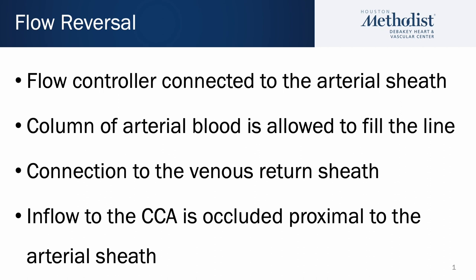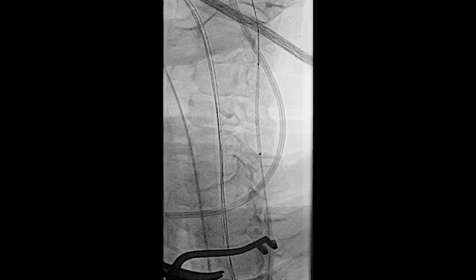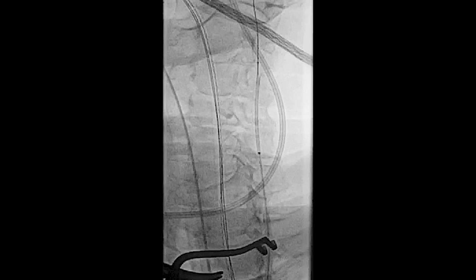To ensure reverse flow, we tightened the umbilical tape on the common carotid artery proximal to the arterial sheath. The lesion was crossed with an O14 guidewire and we performed primary stenting with a 10x40 mm unrolled trans-carotid stent.